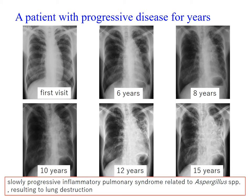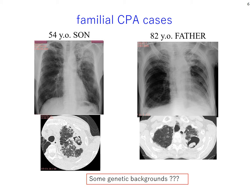This is another example of CPA — familial cases: a 54-year-old son and an 82-year-old father, suspecting some genetic backgrounds, although not elucidated at all so far. When we think of etiology, although there exist pathophysiological forms of CPA such as simple cavitary, necrotizing, or fibrous, and combinations of these are known, etiology still remains to be seen. No promising treatment has been standardized yet.